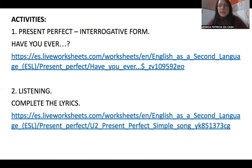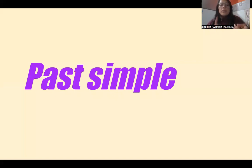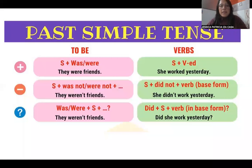Now we are going to talk about past simple. In some cases we can use both present perfect and past simple, and we can confuse them. We use past simple when you talk about activities that you finished. You can use the verb 'to be' — was/were — in past, and also regular and irregular verbs. With regular verbs you add '-ed' according to the rules; with irregular verbs the form changes and you have to memorize the words.